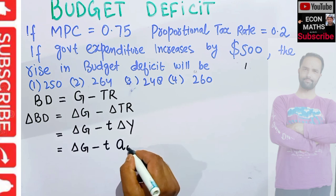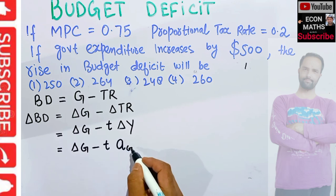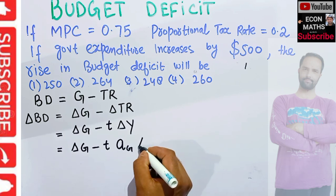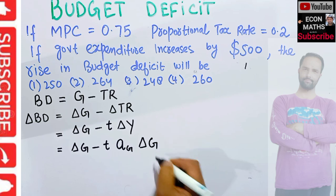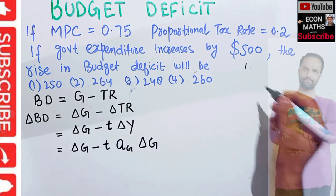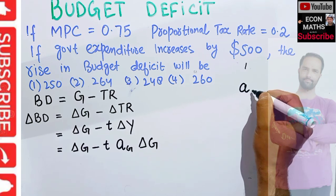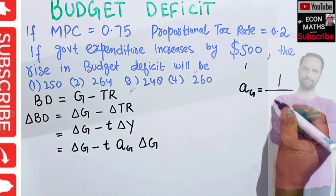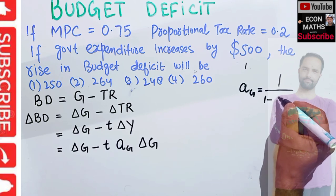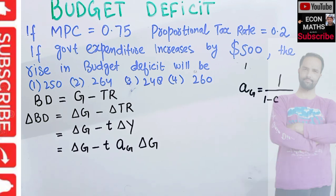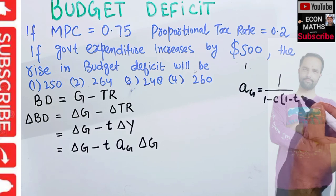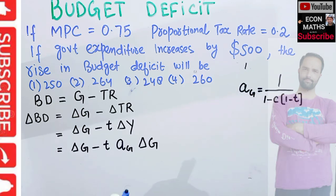The change in income equals the government expenditure multiplier (subscript G) times change in government expenditure. The government expenditure multiplier is equal to 1 divided by (1 minus C times (1 minus t)), where C is the marginal propensity to consume and t is the proportional tax rate.